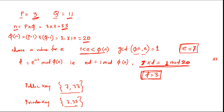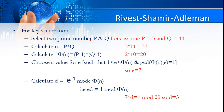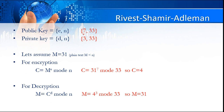Now let's look at the same thing on the presentation. I have chosen two prime numbers 3 and 11, then got N, phi(N), E, and D. Our public key is (7, 33) and our private key is (3, 33).